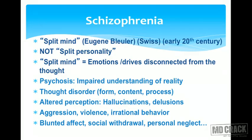Schizophrenia is often called 'split mind.' Eugen Bleuler, a Swiss scientist in the early 20th century, gave this word to describe schizophrenia. It's not split personality — it's split mind, meaning the emotions and drives are disconnected from the thought.